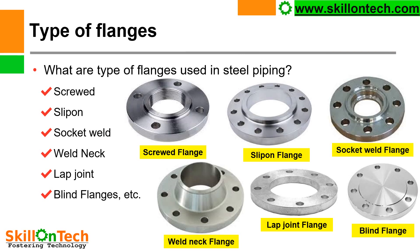Types of flanges. As we know, flanges are used to connect pipelines in industries. So we must know what are the types of flanges and which flanges are mainly used in industries. What are the types of flanges used in steel piping? First: screwed slip-on flanges, socket weld flanges, weld neck flanges, lap joint flanges, blind flanges, etc.